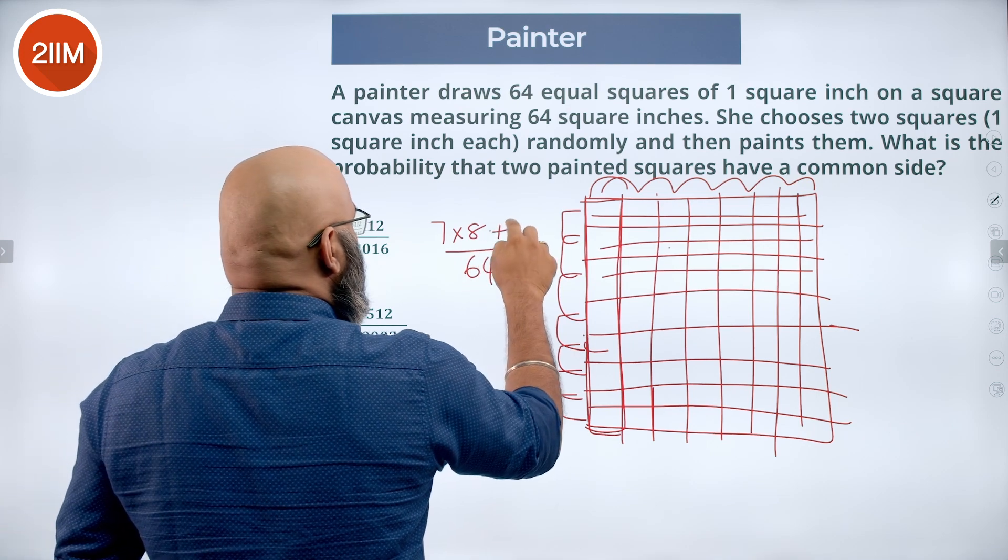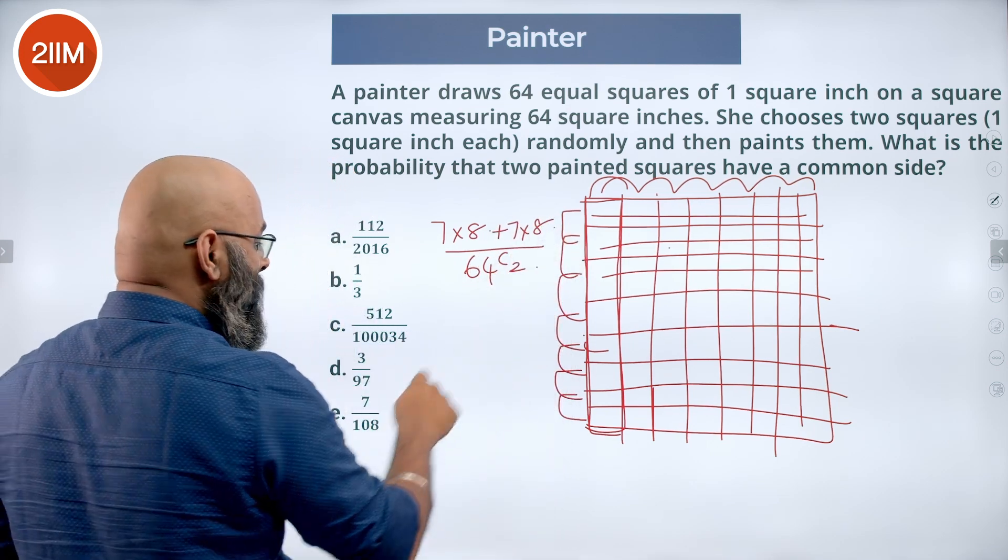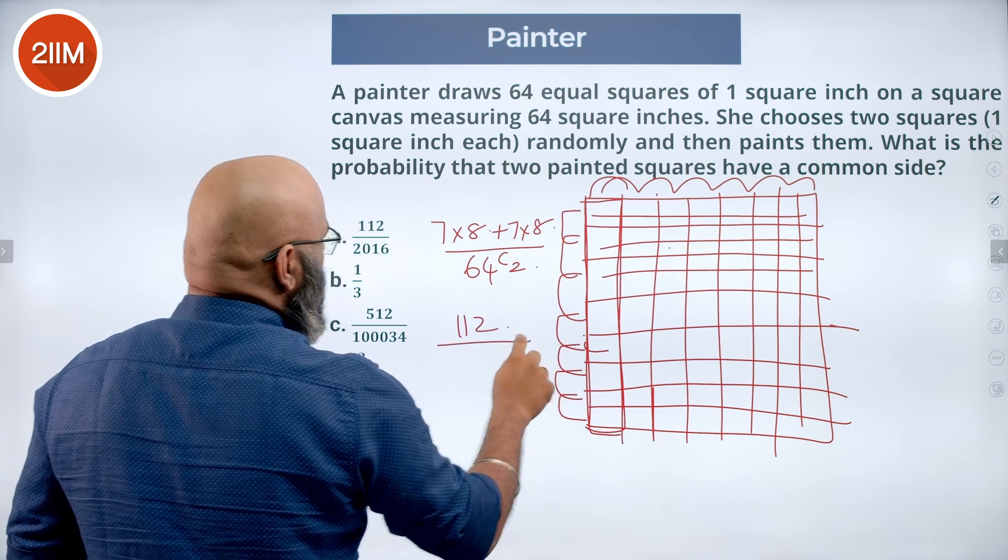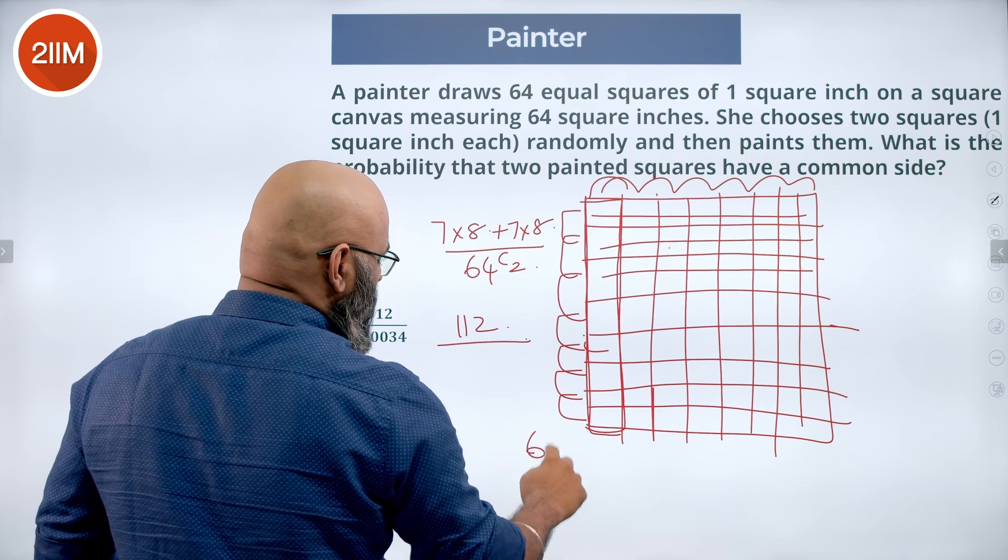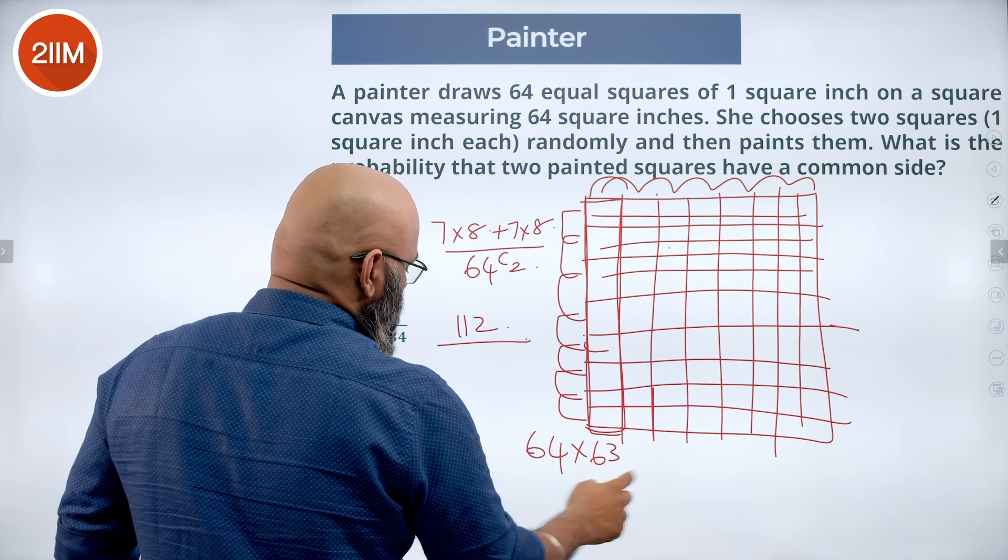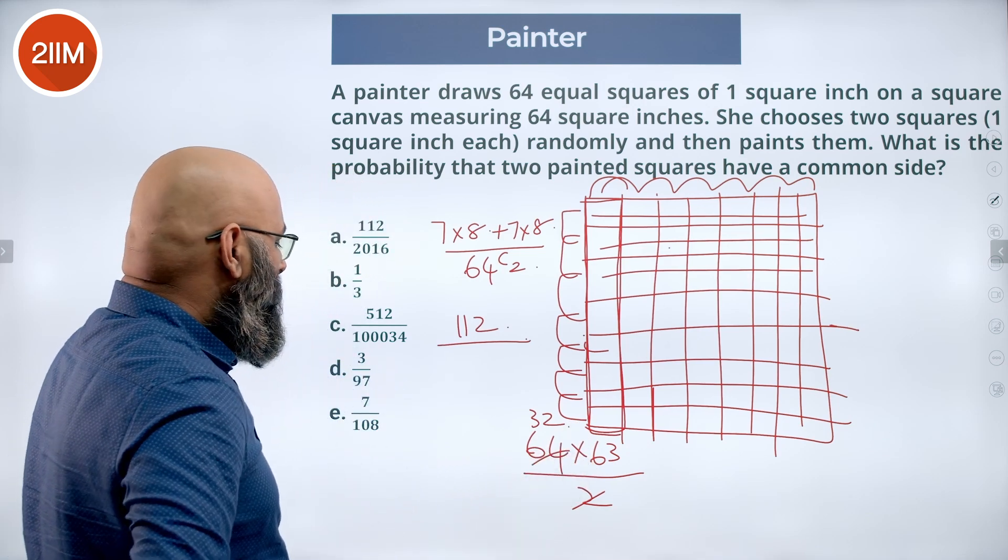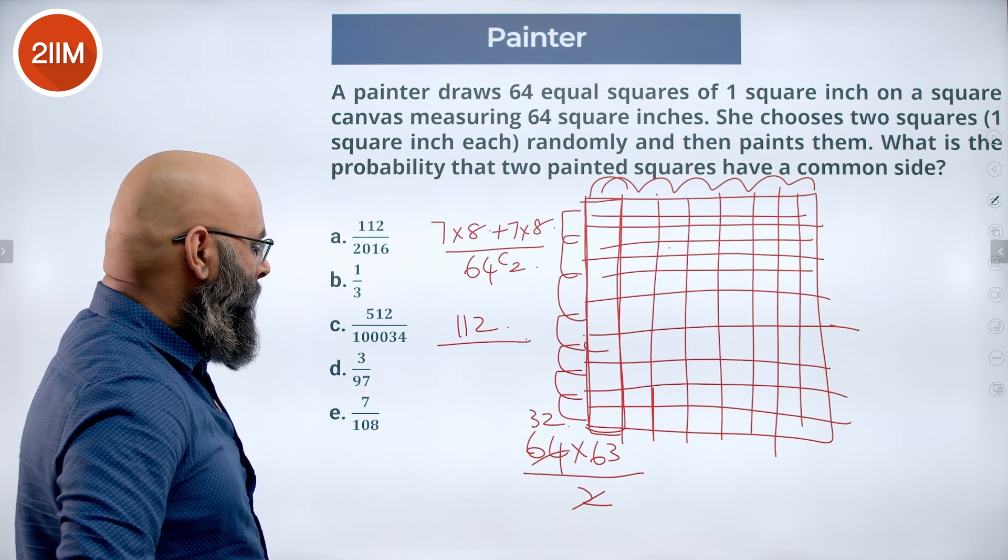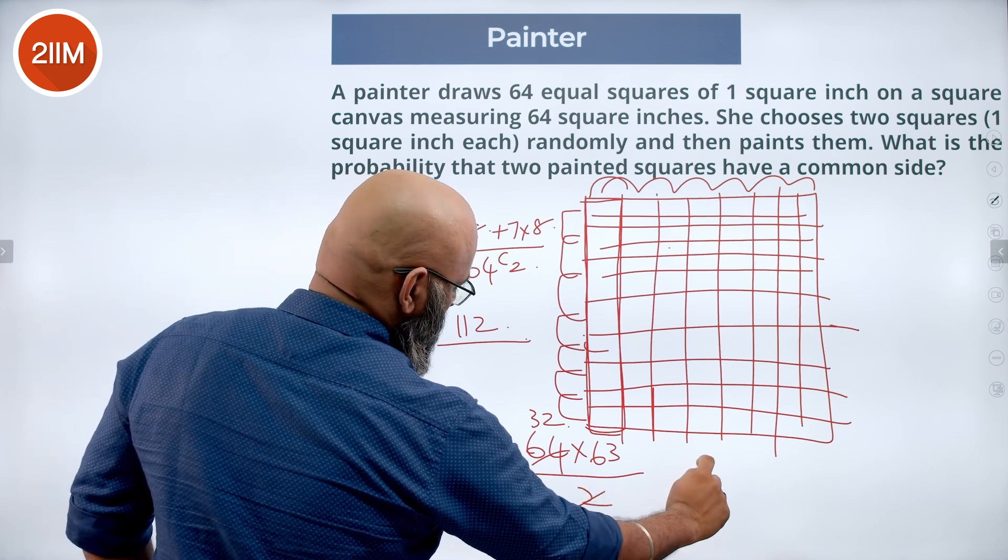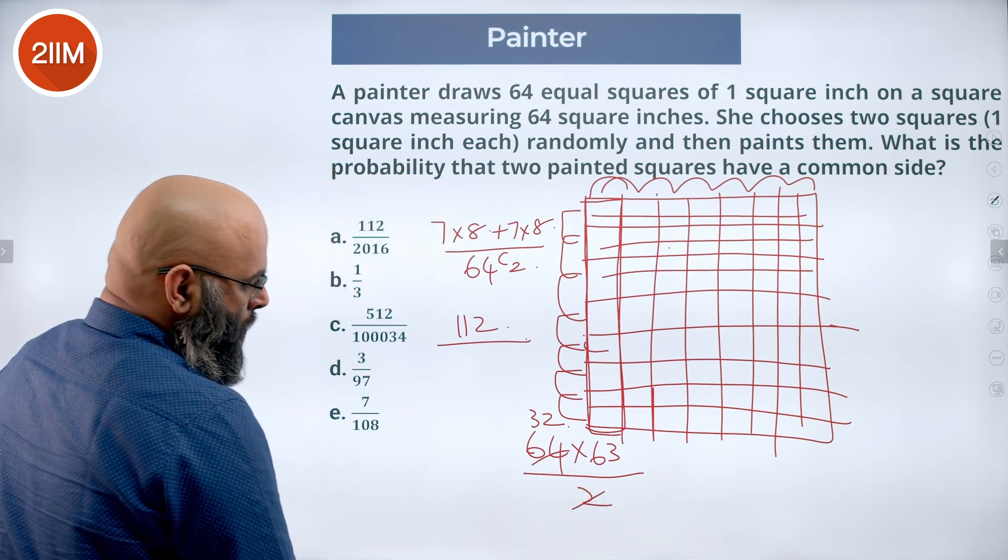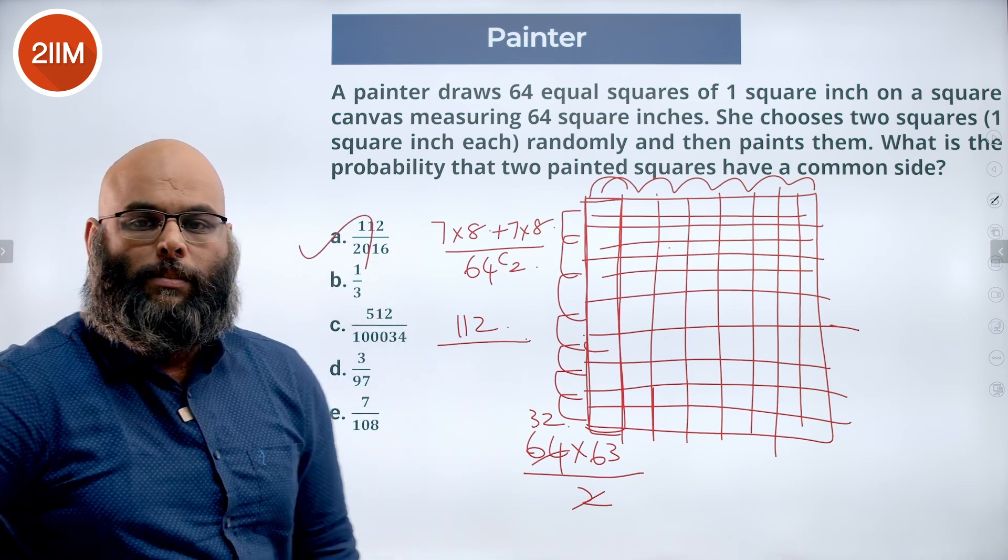In that case that's going to be another 7 into 8. So 56 plus 56 gives me 112 by 64 C2. So 64 into 63 divided by 2 which is 32. 63 into 32, somewhere around 1800 which is probably 1860 plus another 186. 112 divided by 2016. That's your answer.